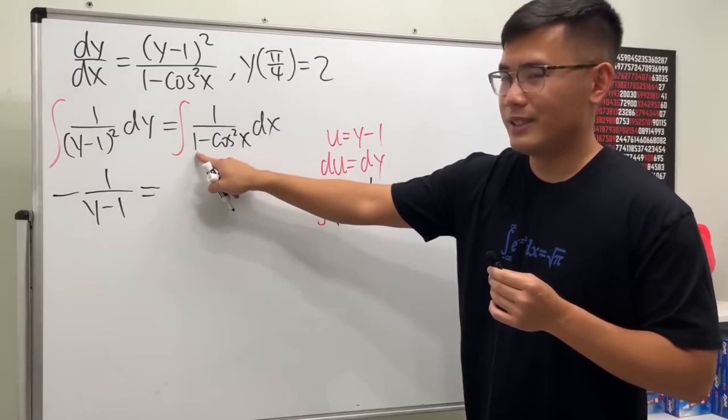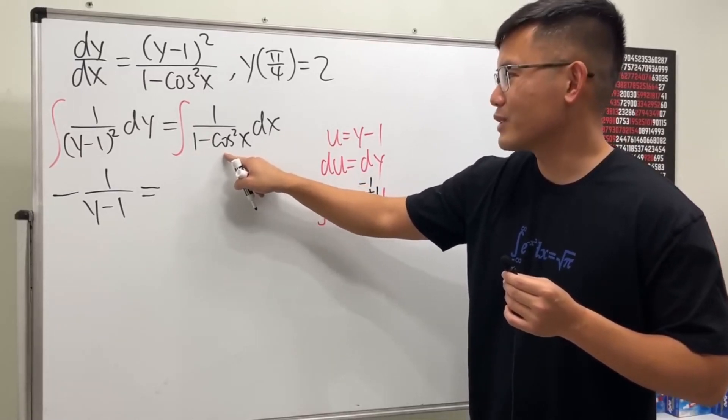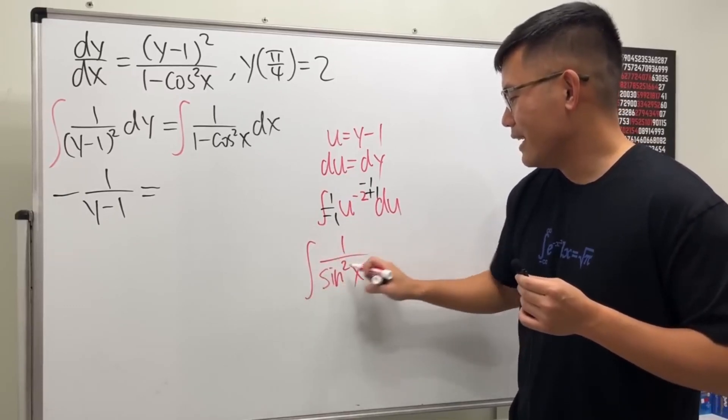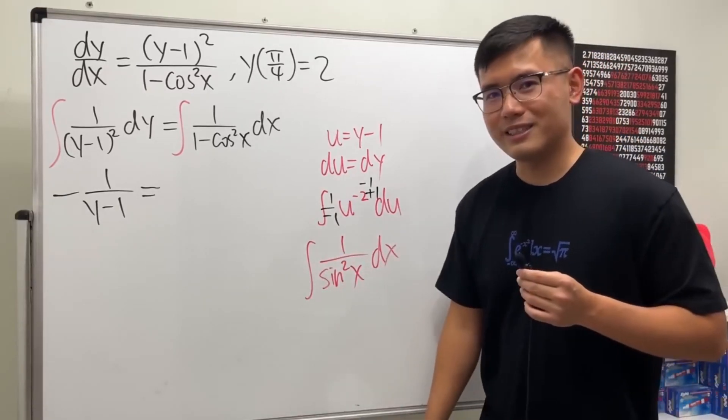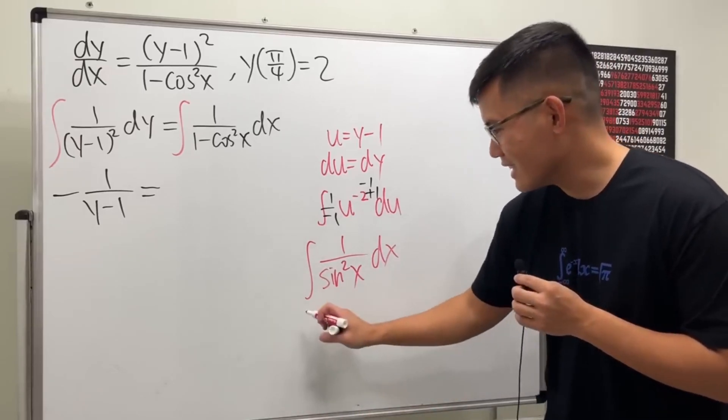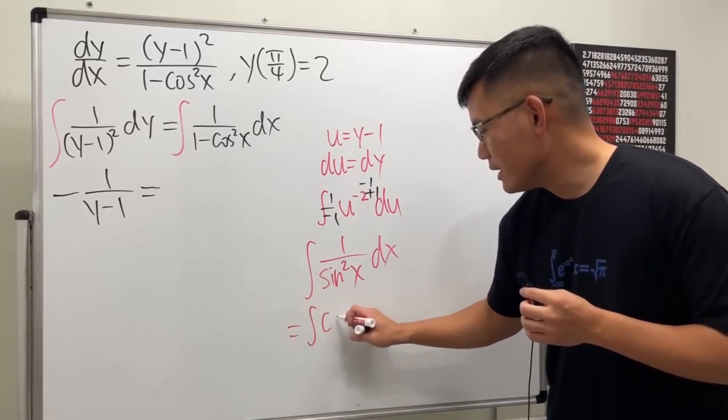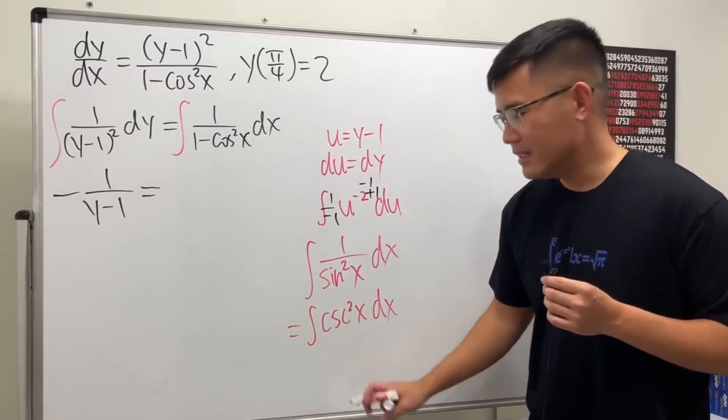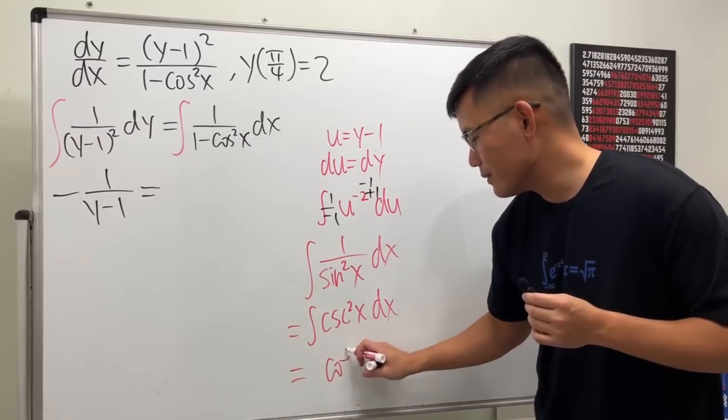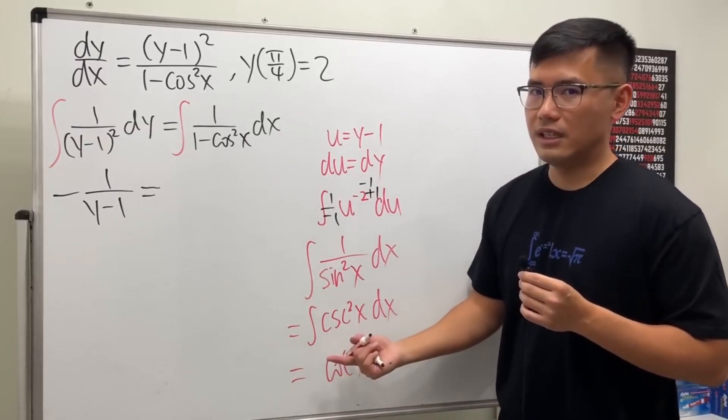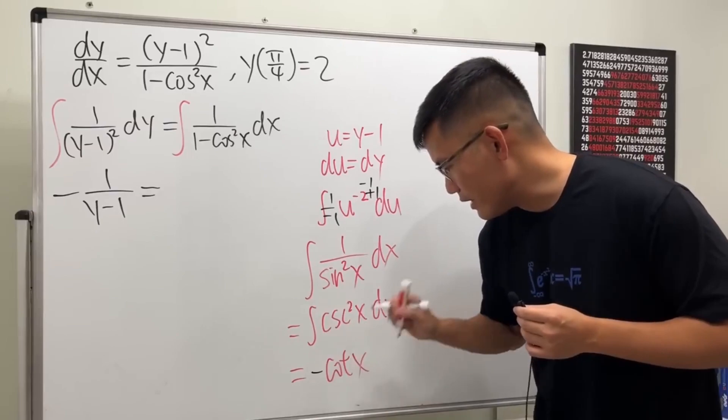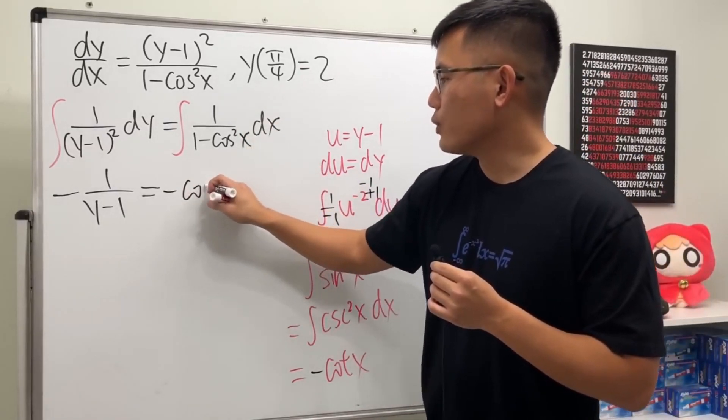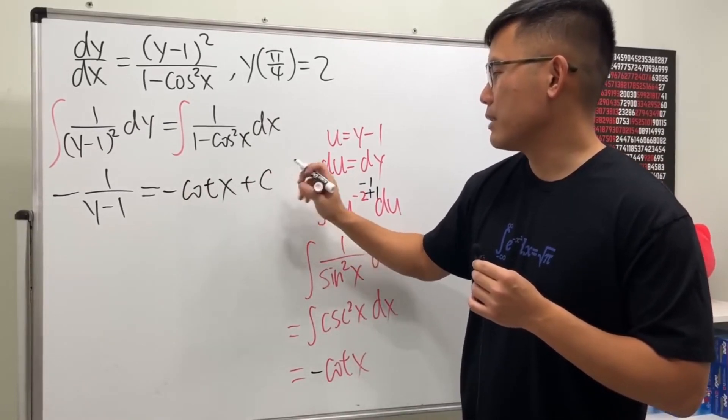How do we integrate this? The truth is, 1 - cos²x equals sin²x on the bottom, and 1/sin²x is csc²x. So we have to think: the derivative of what function gives us csc²x? The answer is cotangent x. Because the derivative of cot x gives us negative csc²x, we have to have a negative right here.